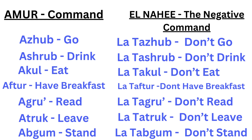If this is not making sense to you, just refer to the book because it'll make sense. La-Tazhub — don't go. La-Tashrub — don't drink. La-Takul — don't eat. La-Taktur — don't have breakfast. La-Takbruh — don't read. La-Takruk — don't leave. La-Takgum — don't stand. For the negative command, all that's added is La and the character T.